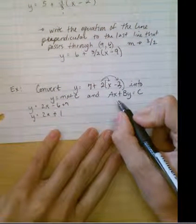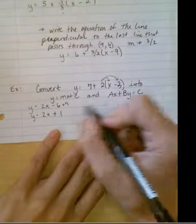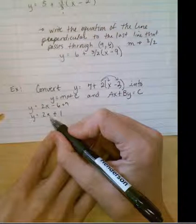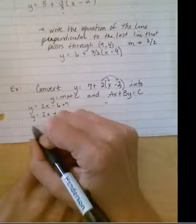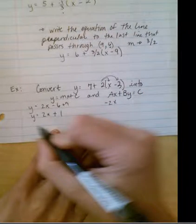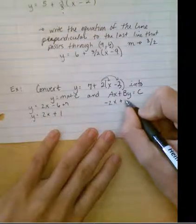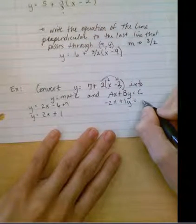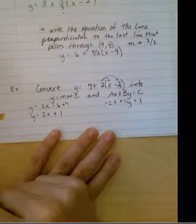Now let's put it into Ax plus By equals C. Well, this one's going to be really easy because I'm just going to be able to move the x to the other side. So negative, move this over here, negative 2x plus 1y equals 1. All done. Pretty easy.